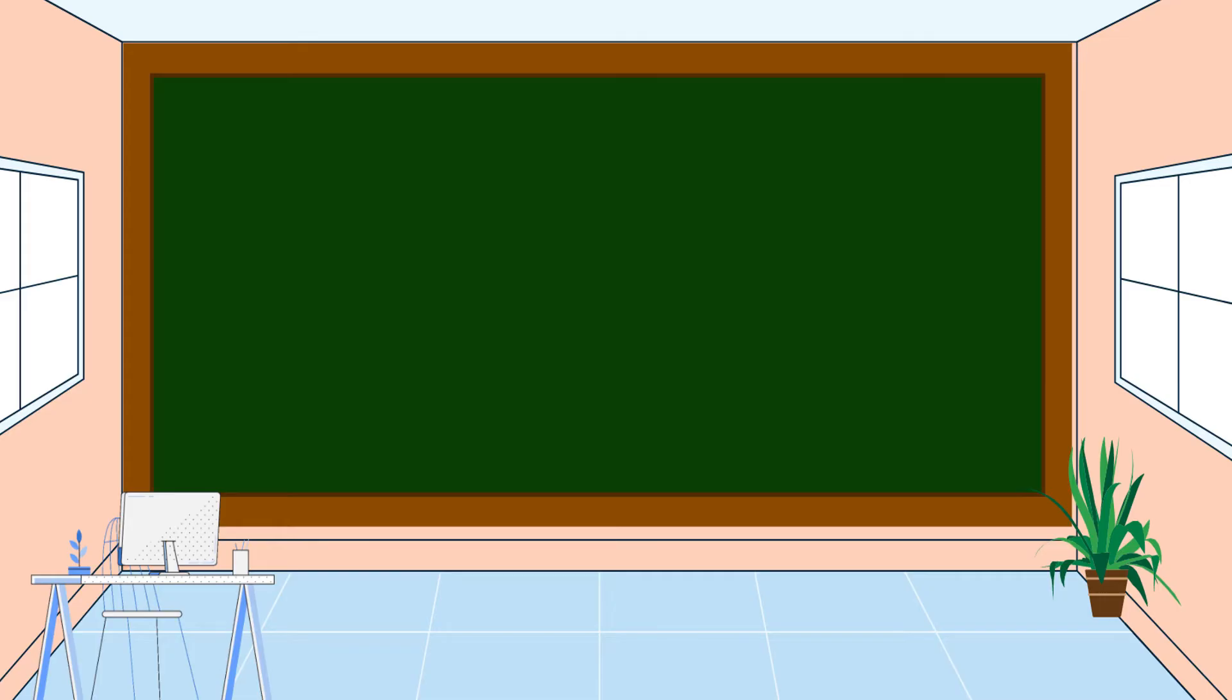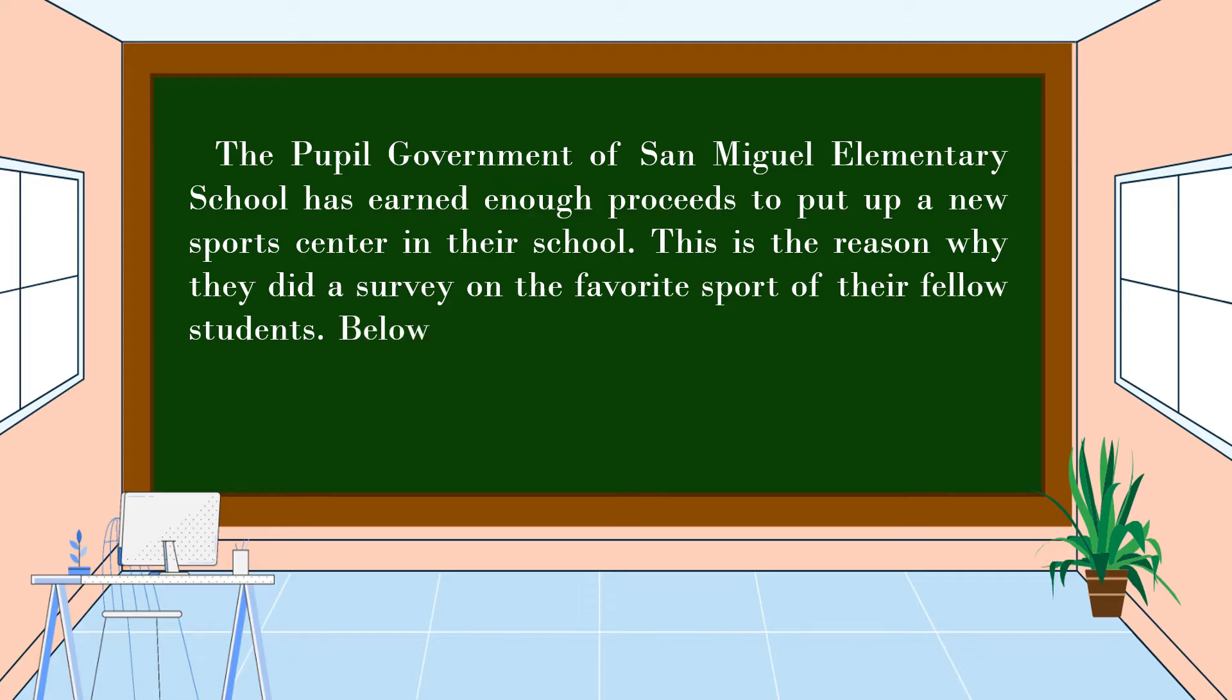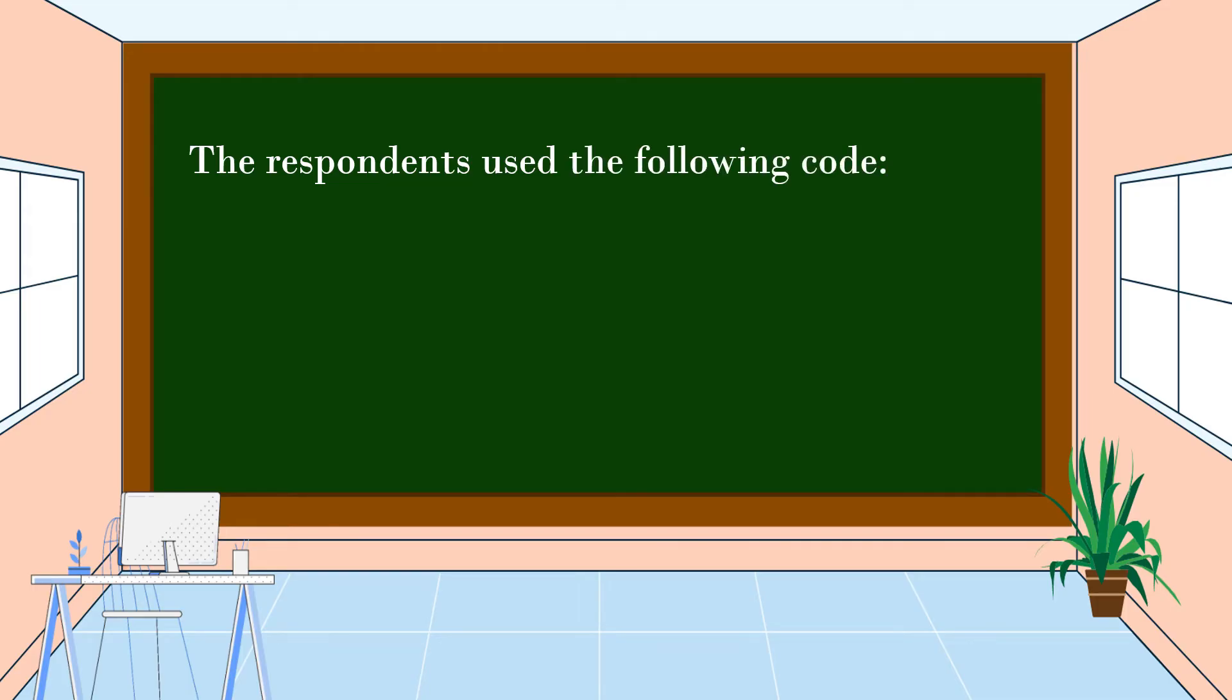To understand fully our lesson for today, let's study this example. The pupil government of San Miguel Elementary School has earned enough proceeds to put up a new sports center in their school. This is the reason why they did a survey on the favorite sport of their fellow students. Below are the results of the survey. Make a tally and organize the answers in tabular form. The respondents used the following code: A for volleyball, B for basketball, C for chess, D for swimming, and E for badminton.